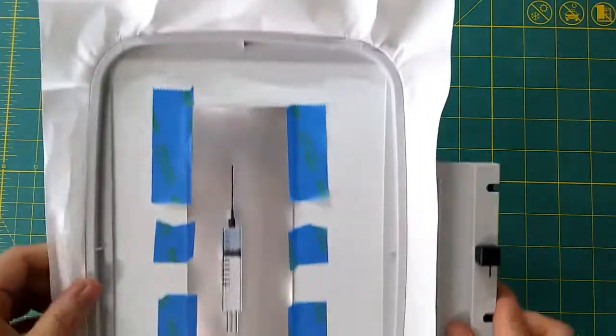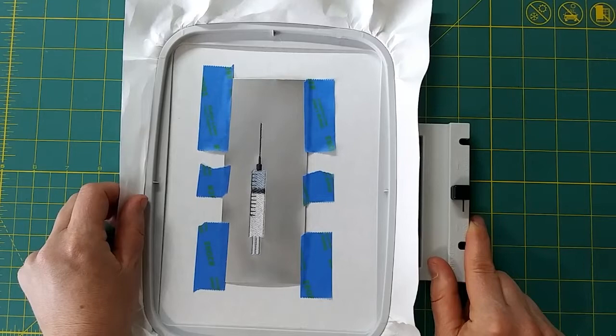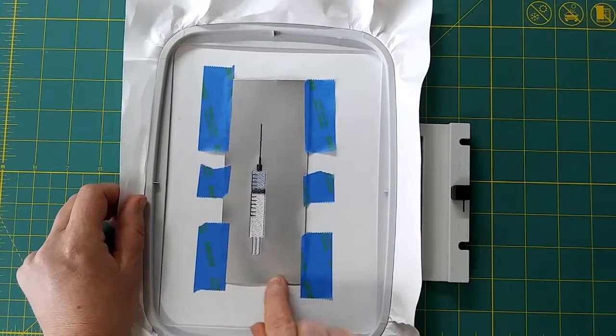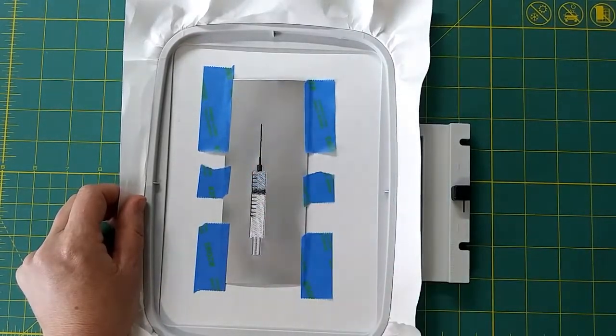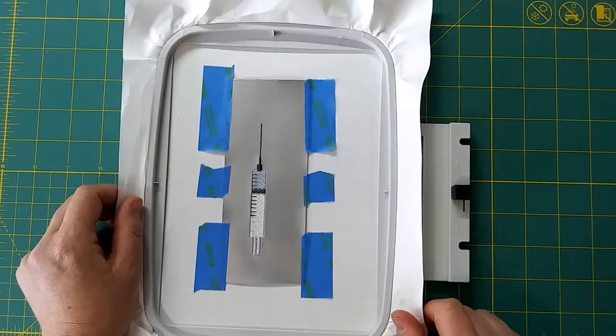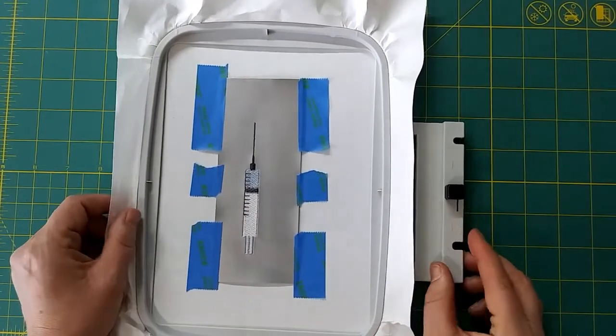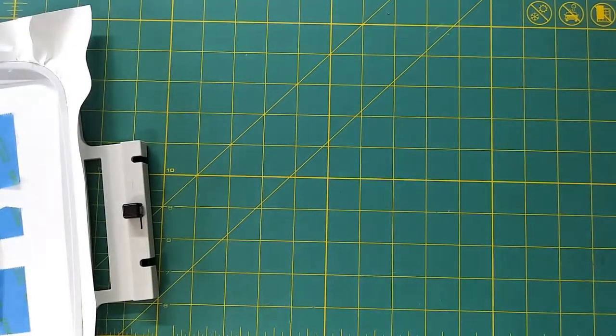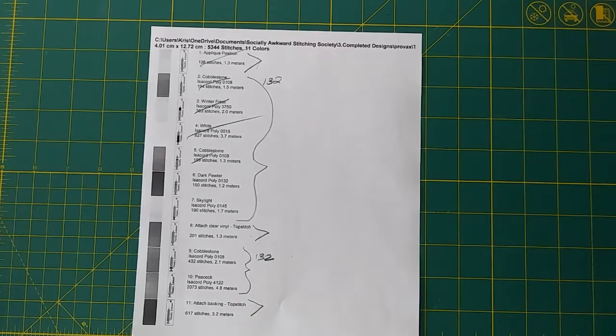Okie dokie artichokies. We are ready to attach our clear vinyl. I have all of the color stops up until the attached clear vinyl stop run. I did swap out a color here because of how similar some of the grays are to this background. I decided to use this darker color here for the needle. And I probably would have done it a little bit lighter than that but I wanted to make sure that you guys could see on here because I know that on camera we lose some of the contrast.